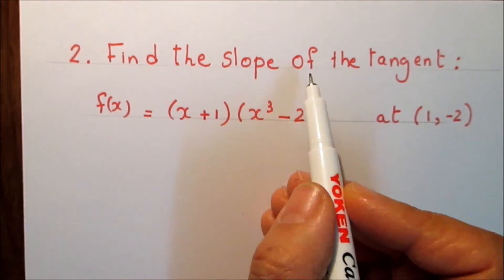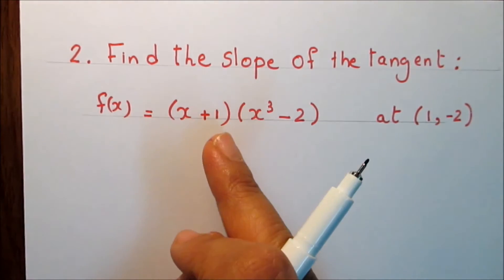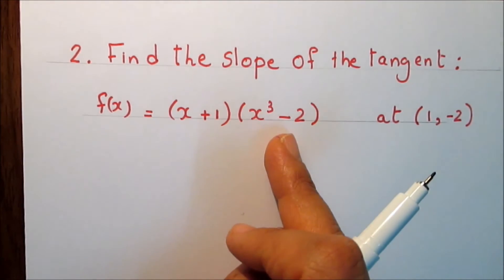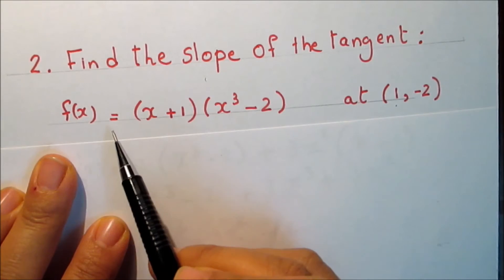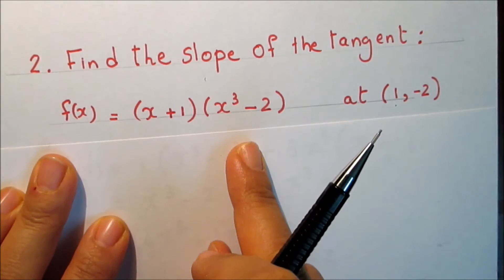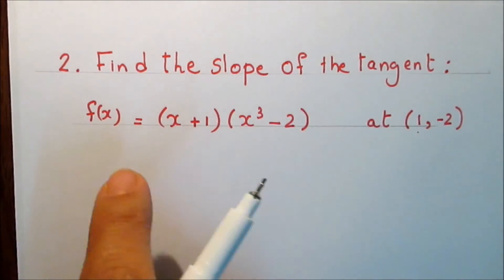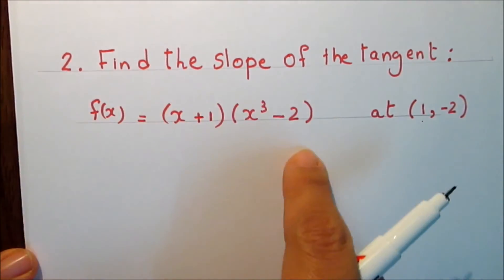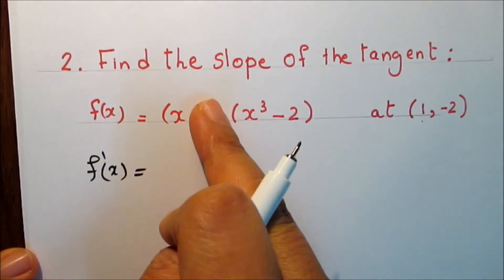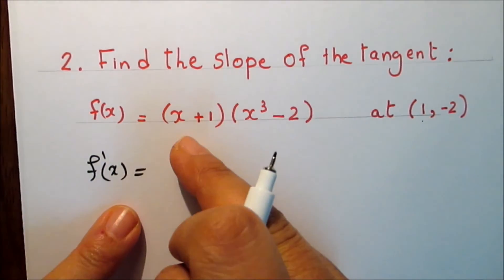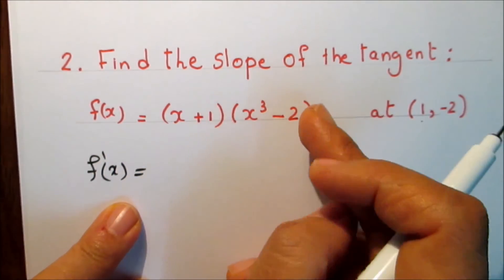Number 2: find the slope of the tangent of the curve f(x) = (x + 1)(x³ − 2) at the point (1, −2). The first derivative of the function at this point represents the slope of the tangent. So let's find the first derivative. f'(x) equals — this is the product of two functions, the first one and the second one — so f' equals the derivative of the first times the second plus the derivative of the second times the first.